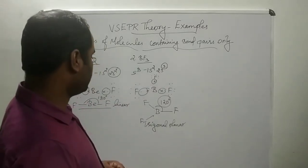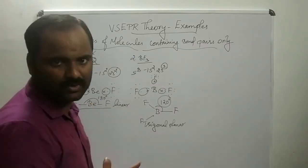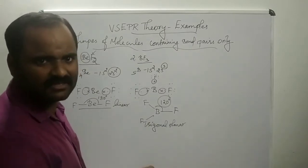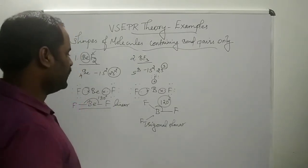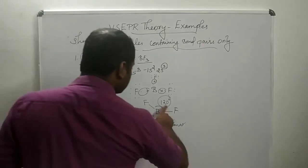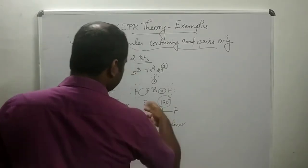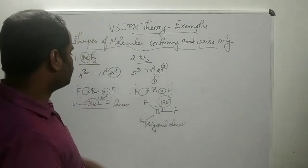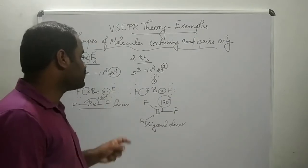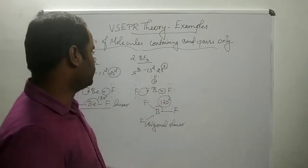In the trigonal planar structure, the three bonds stay as far apart as possible to achieve maximum distance between them. This is the basis of VSEPR theory: bond pairs try to stay as far apart as possible to attain maximum stability and minimize repulsion between the bond pairs.